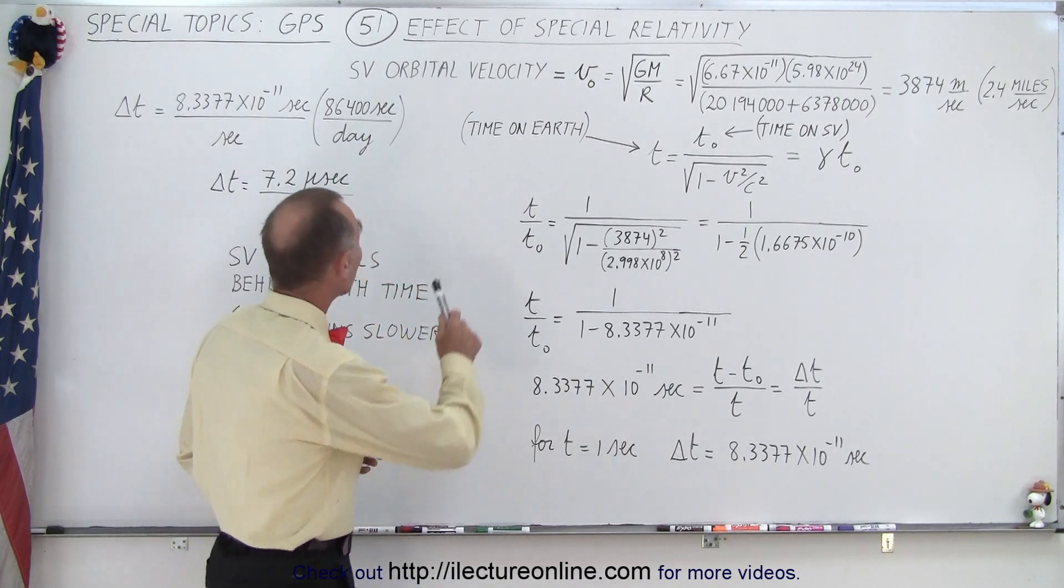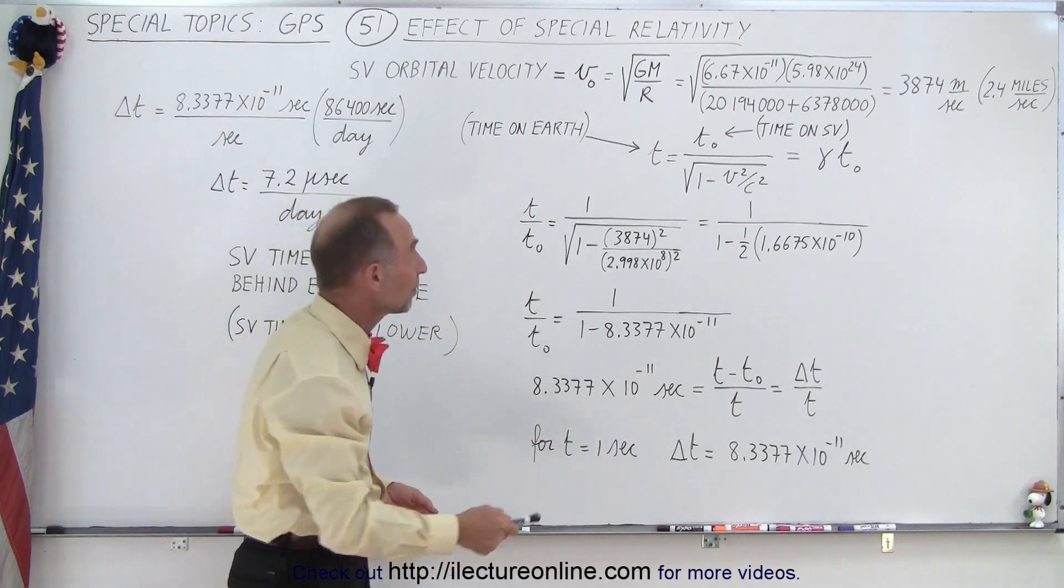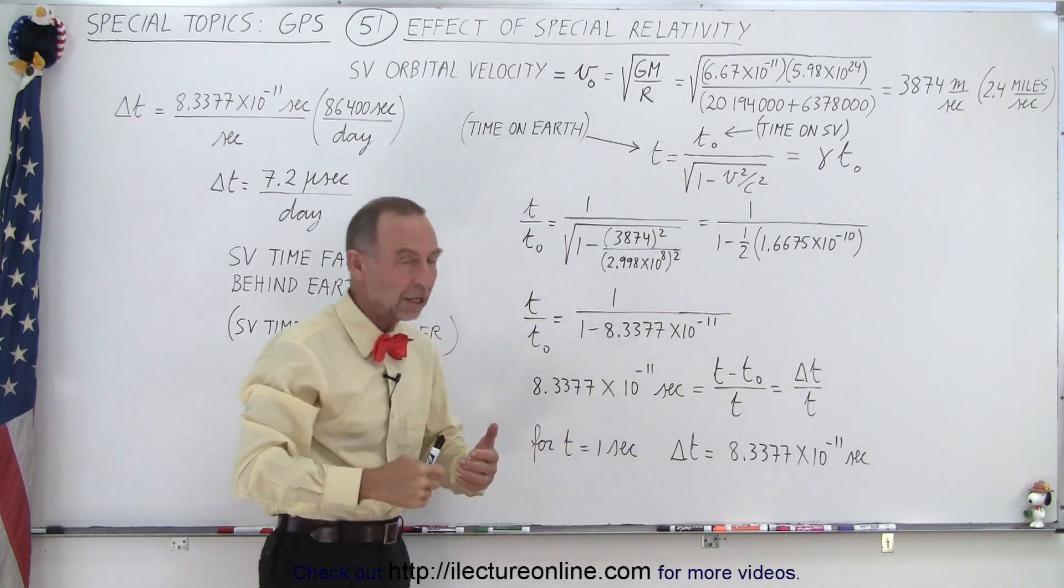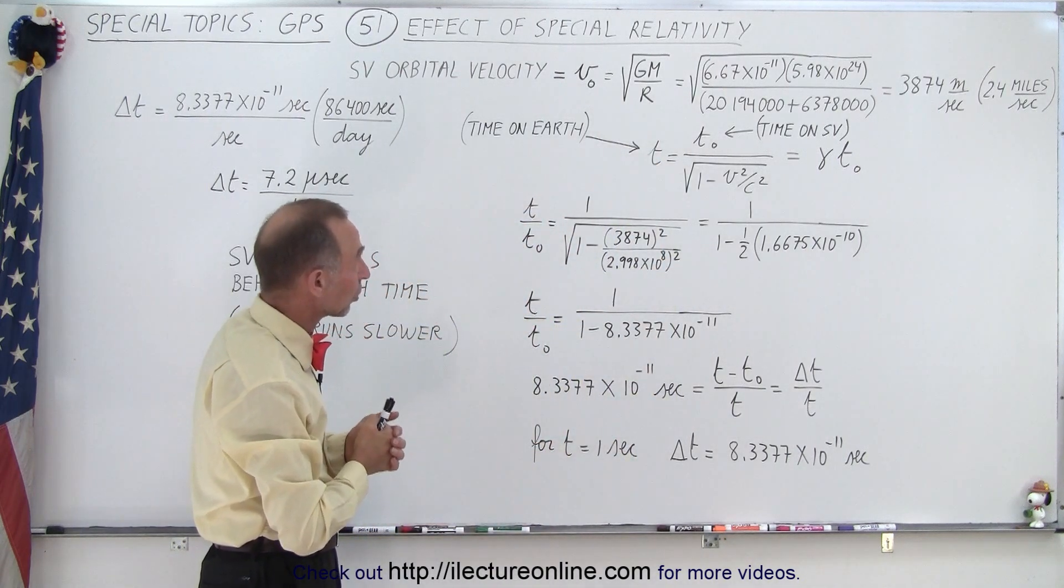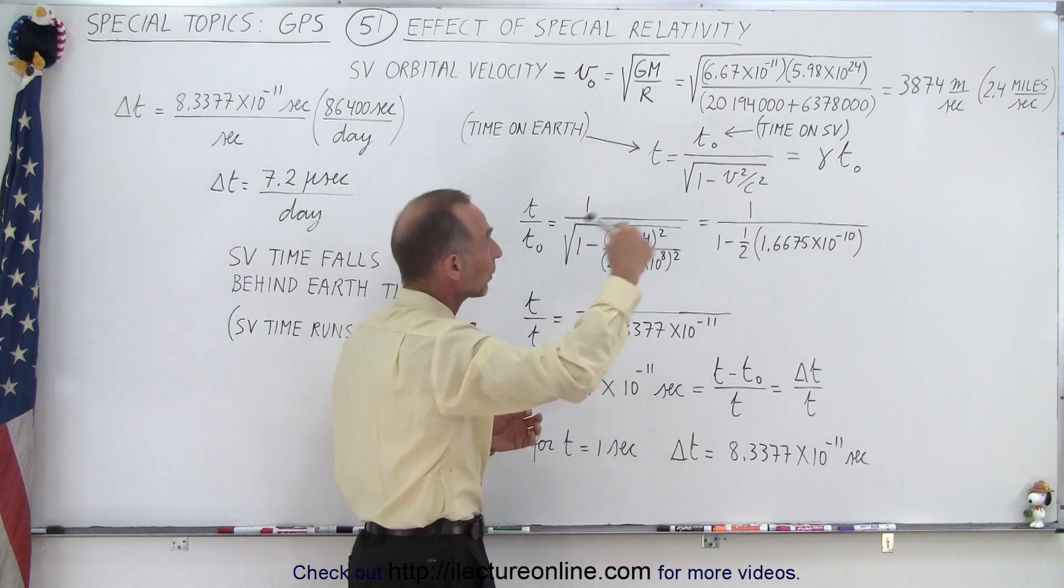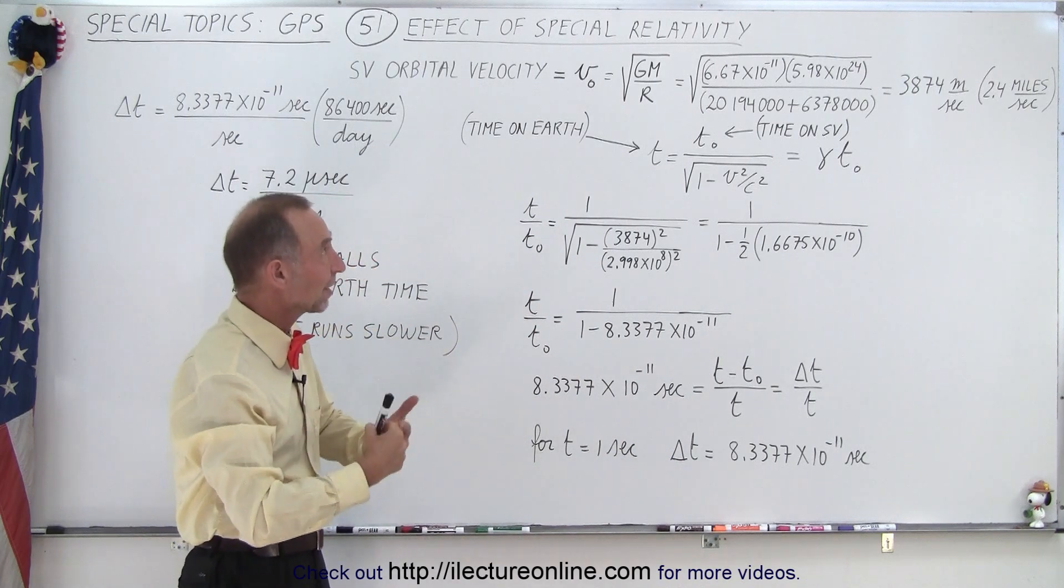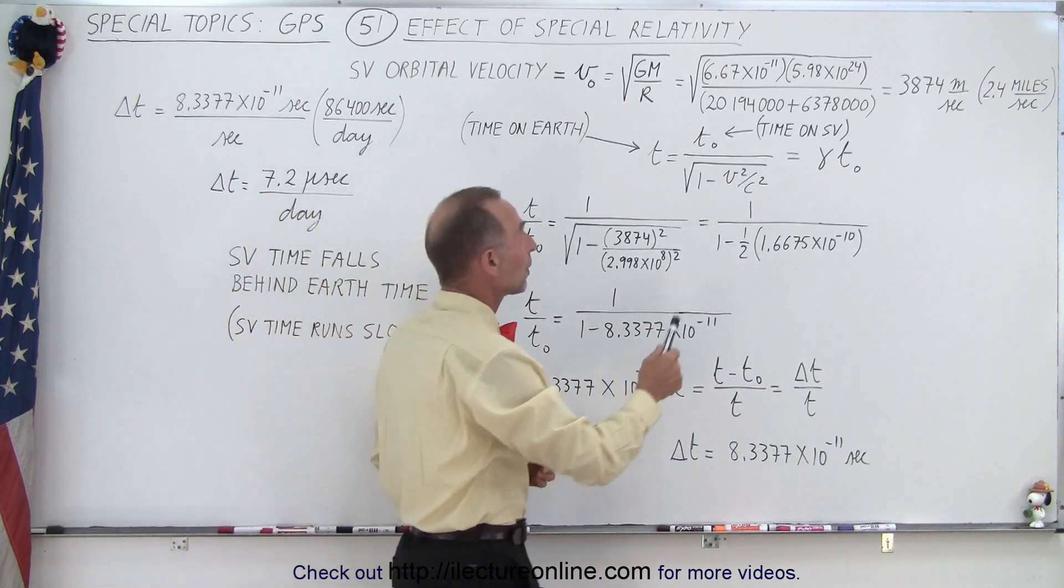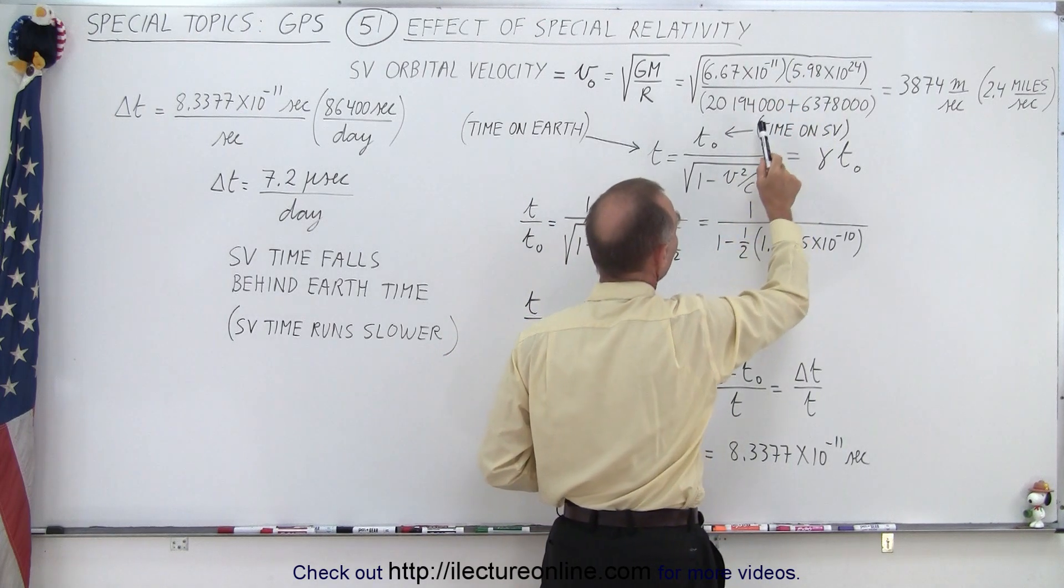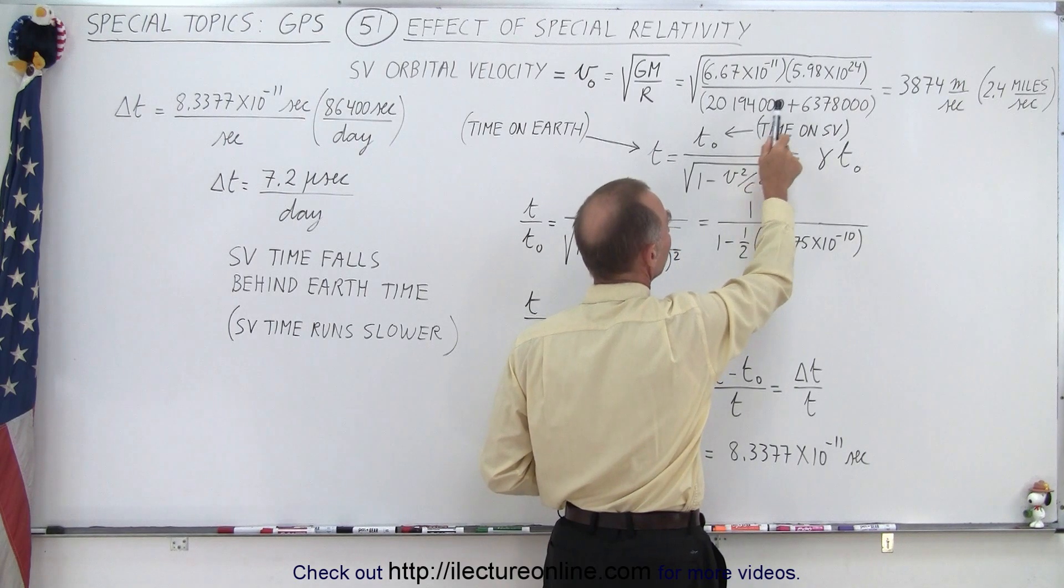We know that the orbital velocity of any object going around any other object can be calculated by taking the square root of GM over R, where G is the gravitational constant, M is the mass of the object we're going around, and R is the radius of the orbit itself. In the case of a GPS satellite going around the Earth, we have the gravitational constant, we have the mass of the Earth in kilograms, and then this is the height of the SVs above the average radius of the Earth.